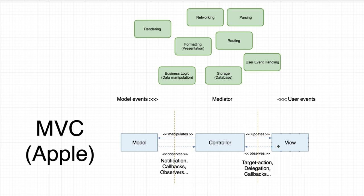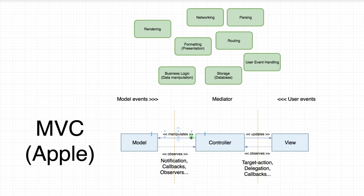There are variations where some developers still bind the view directly to the model instead of having the controller in the middle, but the model should never depend on the controller or the view directly. Another big change is that MVC started being called an architecture pattern, meaning all responsibilities in the application would be handled by one of those layers — for example, networking is now part of MVC, and storage databases too. For very simple applications that might work well, but as applications grow, it starts getting messy.